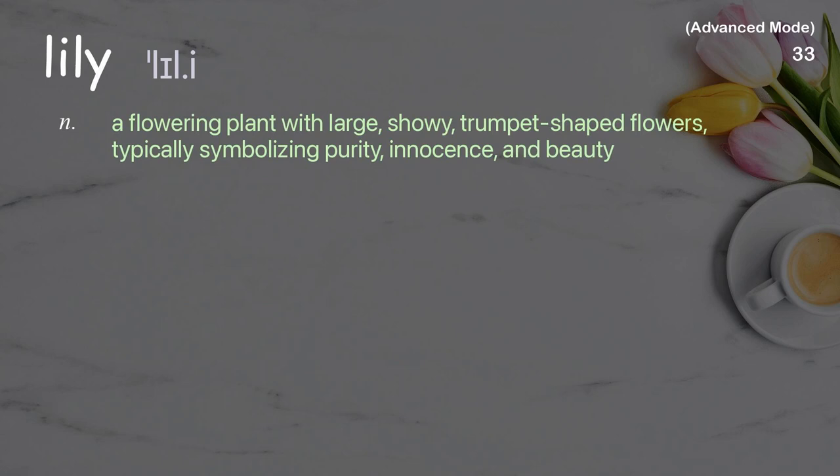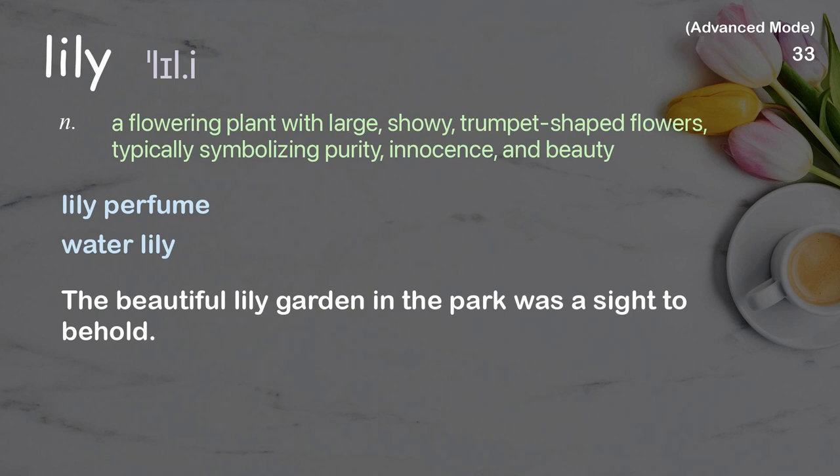Lily: A flowering plant with large, showy, trumpet-shaped flowers, typically symbolizing purity, innocence, and beauty. Examples: Lily perfume, Water lily. The beautiful lily garden in the park was a sight to behold.